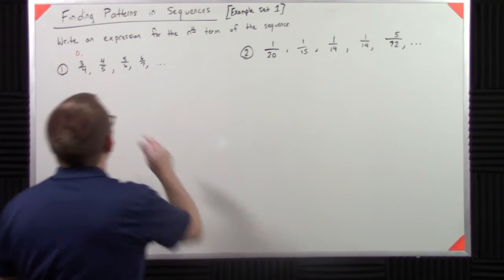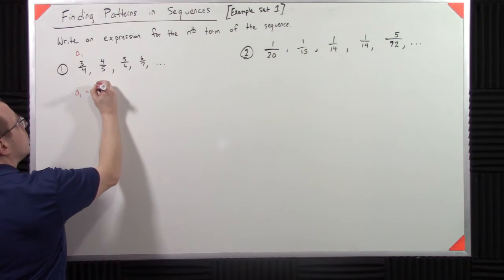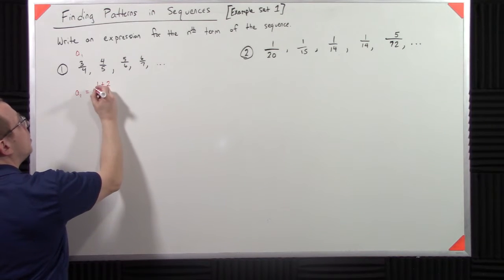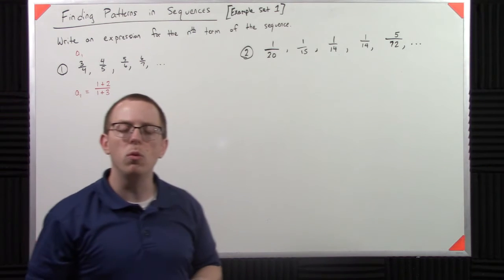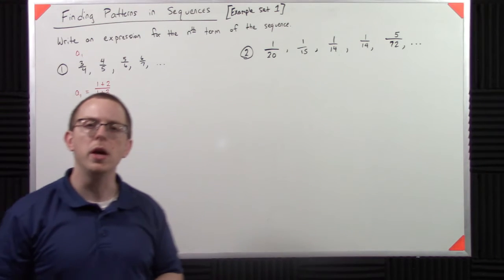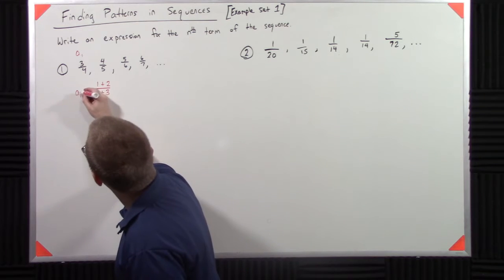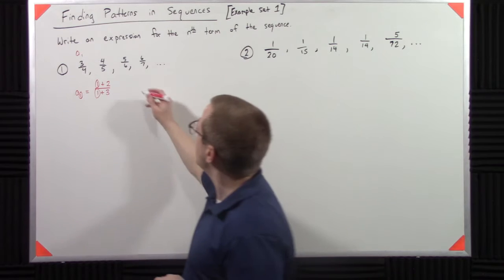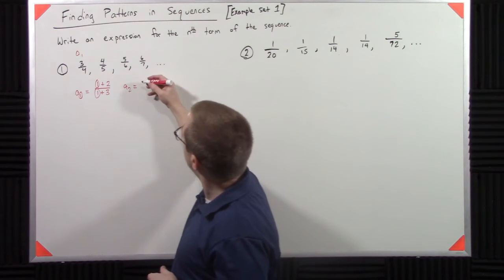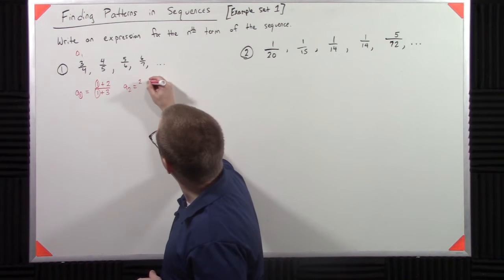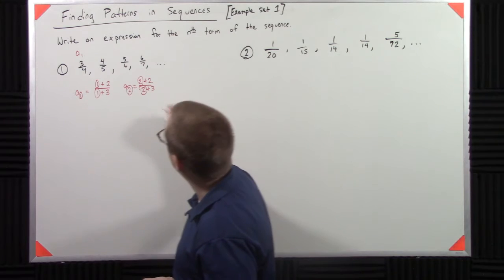So it starts, let's see, A1 is 1 plus 2 over 1 plus 3. So we're trying to get this in terms of our n. So how do I match that? Well, A2 is 2 plus 2 over 2 plus 3.